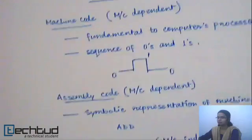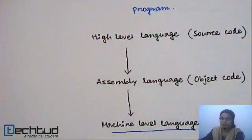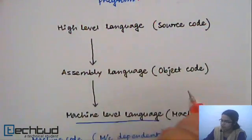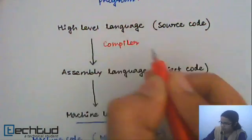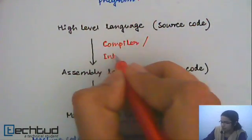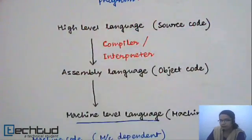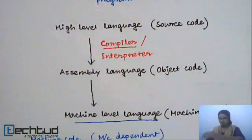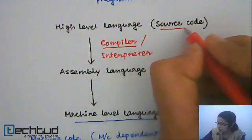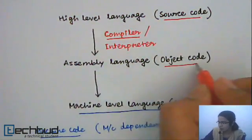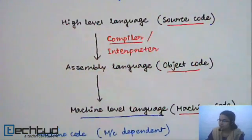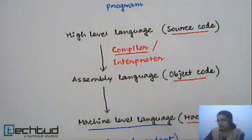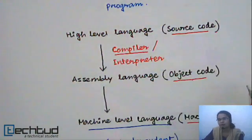So who does these transformations? We said that high-level language is transformed into assembly-level language. The program which does this is called a compiler, or it may also use an interpreter. A compiler is a program which converts a high-level programming language source code into a lower-level code — like object code — or it may also convert it directly into machine code, depending on the specific compiler. It takes the whole program and converts it entirely into a low-level language code.